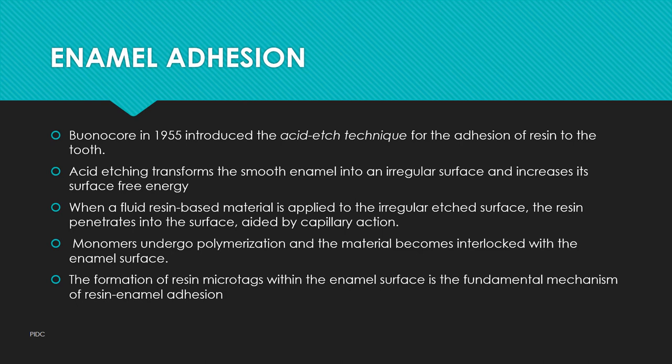Enamel adhesion: Bunocore in 1955 introduced the acid etch technique. Adhesion to an irregular surface increases free energy. When a fluid resin-based material is applied to the irregular etched surface, the resin penetrates into the enamel, forming resin microtags. This is the fundamental mechanism of resin-enamel adhesion after acid etching.